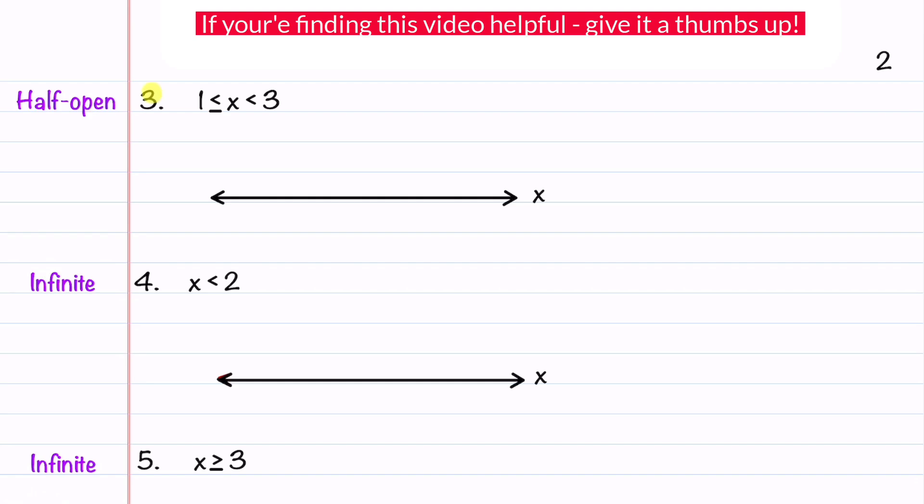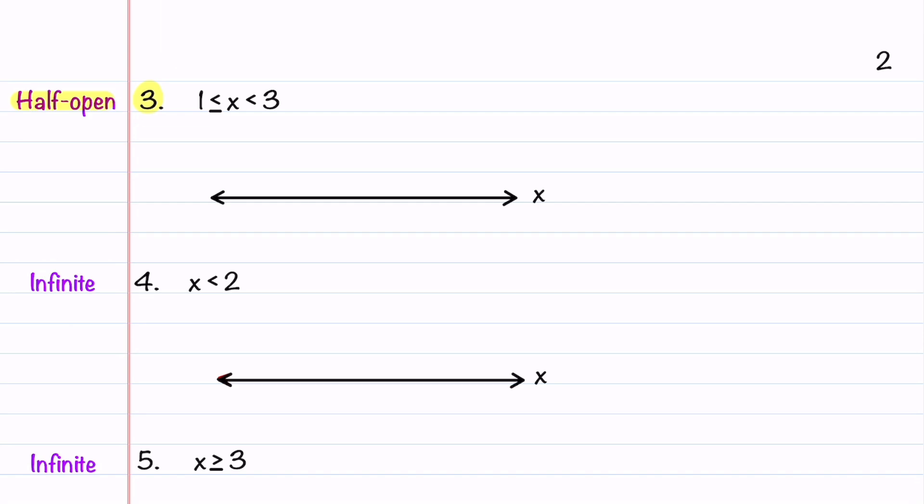Our third example is a half-open interval example, or it can also be called a half-closed interval example. Our interval indicates that x is all numbers between 1 and 3. It includes 1, but it does not include 3. Because it includes 1, we'll have a bracket for our 1. And because it doesn't include 3, we'll have a parenthesis by 3.